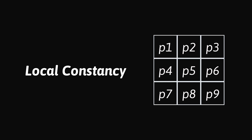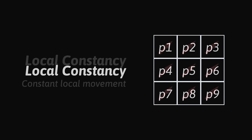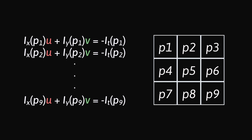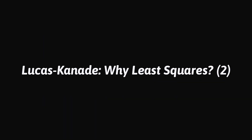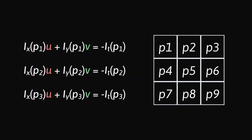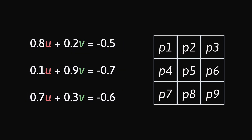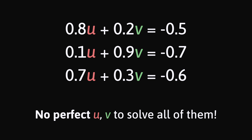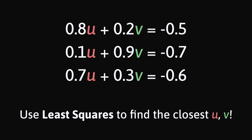The Lucas-Kanade method assumes local constancy — meaning all the pixels within a window should have the same motion. This means we can solve for multiple equations using the same unknowns. Let's calculate the gradients of the first three pixels within this small window. We need to find a u and v that satisfies all of these equations simultaneously. While we assume all pixels within the window move in the same direction, image noise prevents a perfect solution. As a compromise, we use the least squares solution to find the result that best satisfies all equations simultaneously.